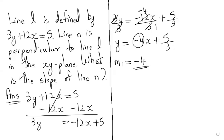Here the hint is given that line n is perpendicular to line l in the xy plane. When two lines are perpendicular, the product of their slopes is minus 1. So we will write m1 times m2 equals minus 1. Here m1 is the slope of line l and m2 is the slope of line n. So m1 is minus 4 multiplied by m2 equals minus 1.